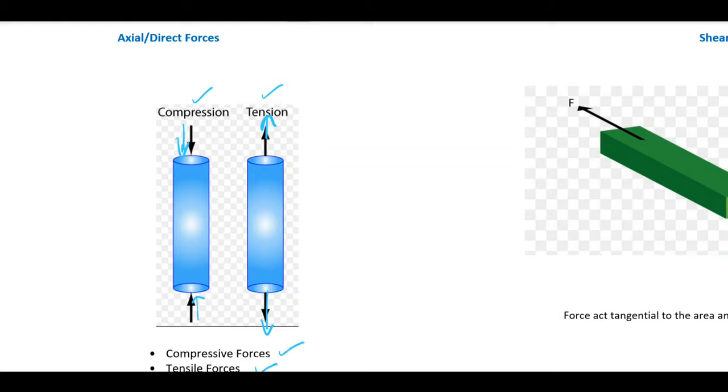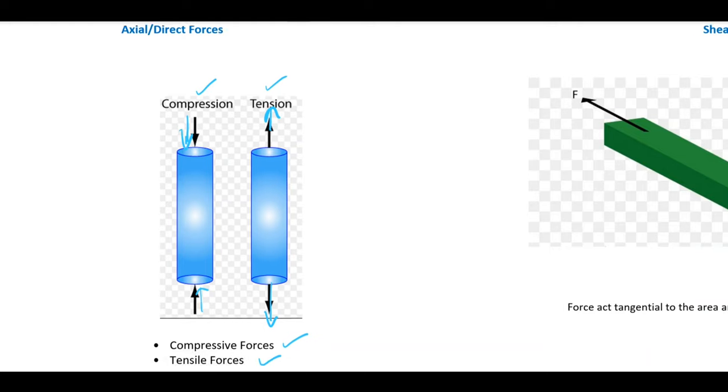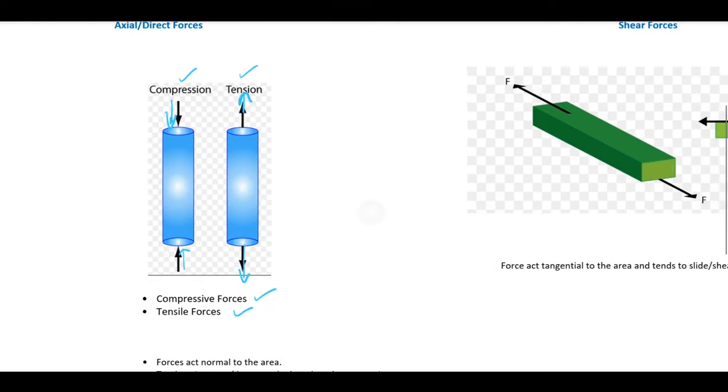Compressive and tensile forces are part of axial forces. They act normal to the area and their tendency is to decrease or increase the length. Simultaneously, we know that the volume of the bar is constant, so if the length increases, its cross-section will decrease.